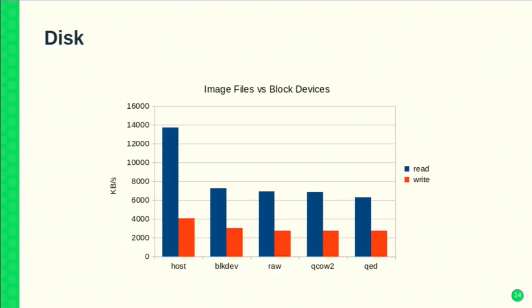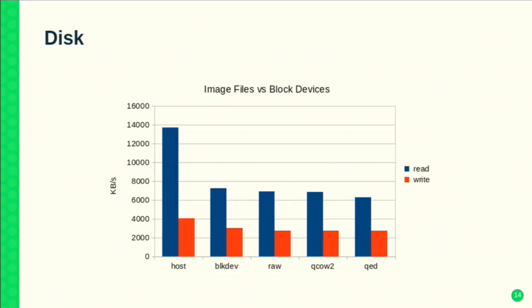This slide shows how the performance of image files has caught up with block devices. Running an FIO test on the host directly using a block device, passing that block device into the guest, and testing various image file formats — the image files perform nearly as well as block devices these days. There may be some caching effect I didn't fully disable, which may explain the large jump in host read performance compared to reading from that device in a VM.